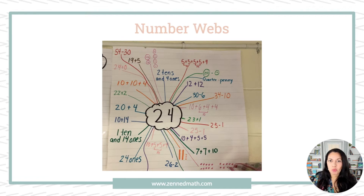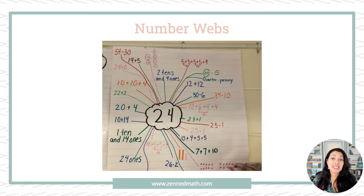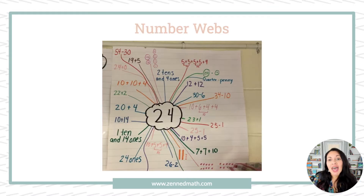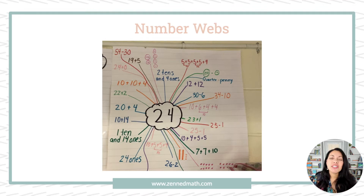All of us are probably familiar with number webs. At the end of the day, this is a number of the day activity — it's having students describe a number in multiple forms and multiple ways. We want students to compose it, decompose it, think of it as odd or even, 10 more, 10 less, one more, one less, things like that. The difference is it gives students a choice in what they come up with. A student might not think about odd or even, but instead think about what 10 more and 10 less would be. You can create a group one where students share ideas and you record all the different ideas they came up with.